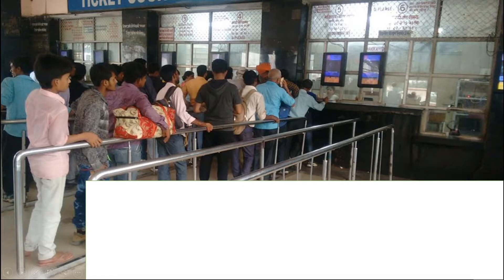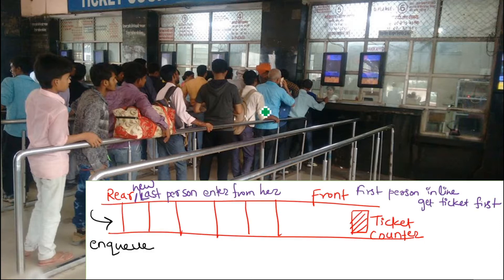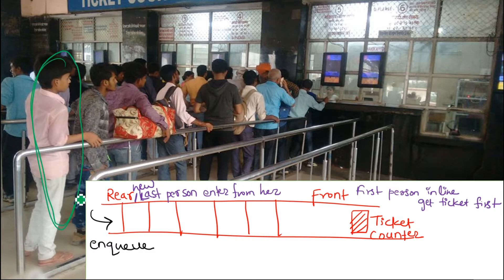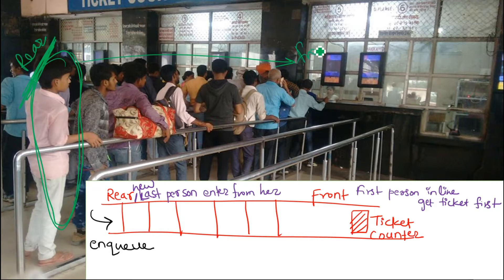For BFS we need the queue data structure. Let's understand how a queue works. Consider an example of a ticket booking section. A person entering now joins at the last position of the queue or line. All persons ahead must get their ticket before the new person can come out. The rear part is where new people join, and the front is where tickets are issued.